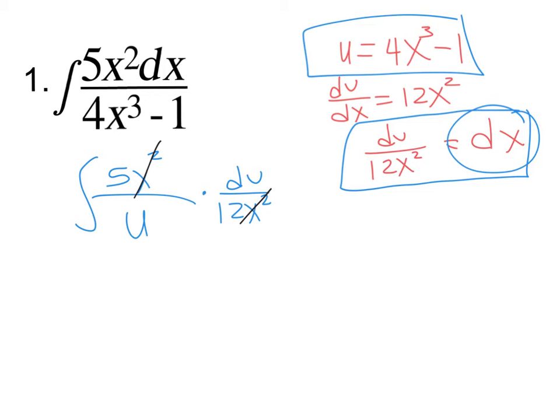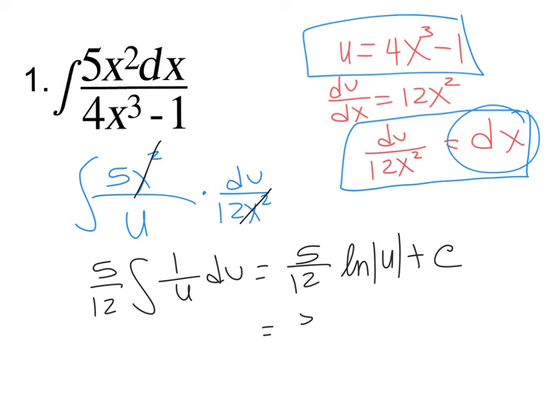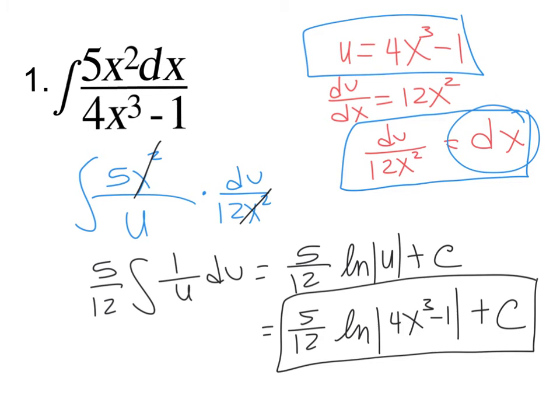I usually stick those in front, so I've got 5 over 12, 1 over u du. And notice it's an ln. Again, really common where we have that denominator and then ln of u plus c. So 5 over 12, the ln of 4x cubed minus 1 plus c, and that's our answer. So hopefully this is getting easier for you.